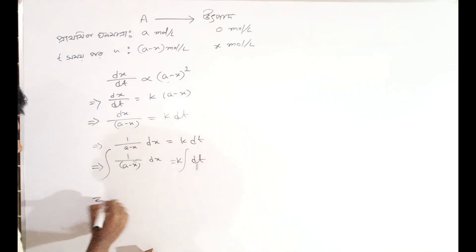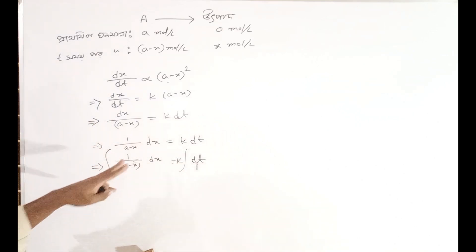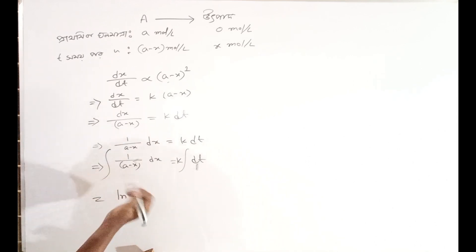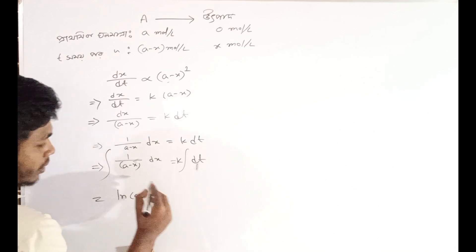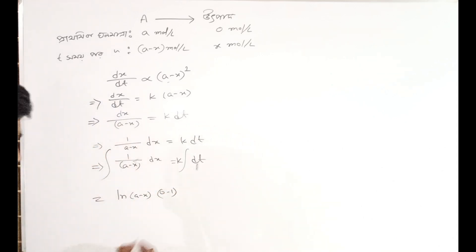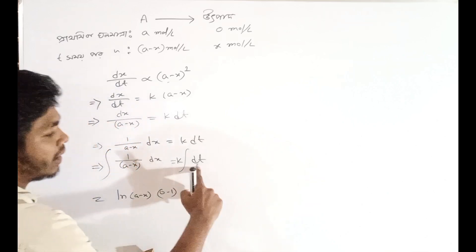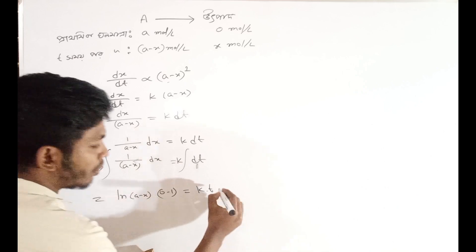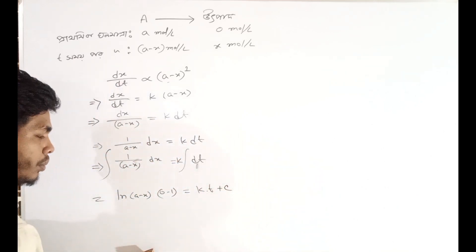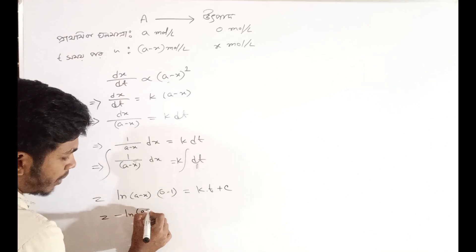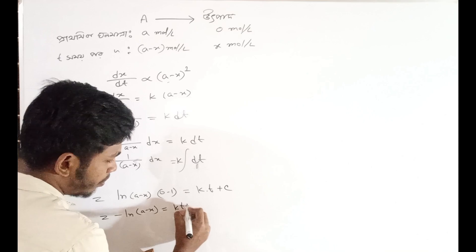On integrating: we know that 1/(a minus x) — that is, 1/x form — gives ln. So ln of (a minus x), taking x from 0. Integrating: (a minus x), when we integrate x, substituting, gives minus 1. So on the left side we get minus ln(a minus x) equals kt plus C.